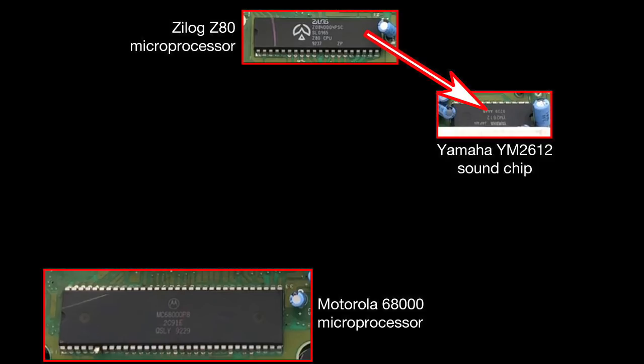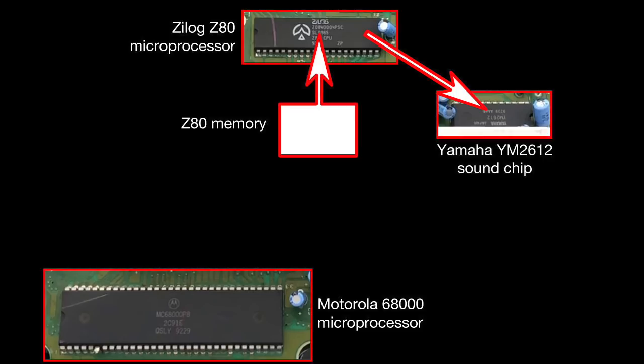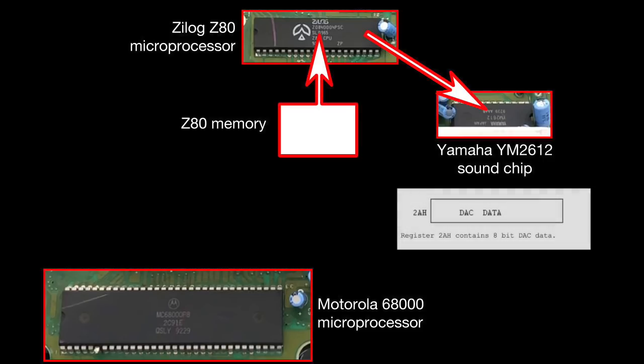To play samples, the Z80 has to very quickly read from its memory and blast data directly to a thing called the DAC, a digital-to-analog converter, on the sound chip. If it does this fast enough, you get a reasonable sounding sample.